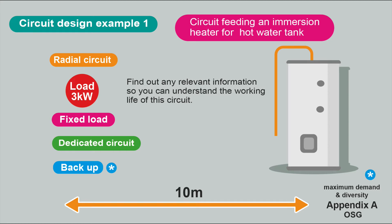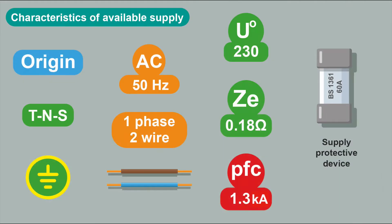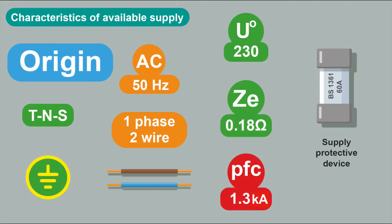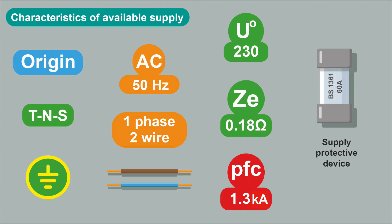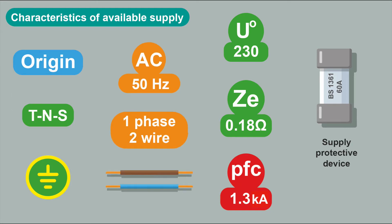Let's use the design principles to design a circuit feeding the immersion heater for a hot water tank. We start with the characteristics of the supply: are we at the origin of the installation where power comes into the building, or are we further down the line fed from other distribution boards? We consider our earthing system — in this case it's TN-S — an AC supply at 50 Hz, single phase two-wire.